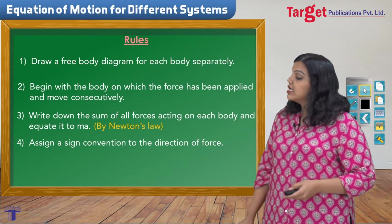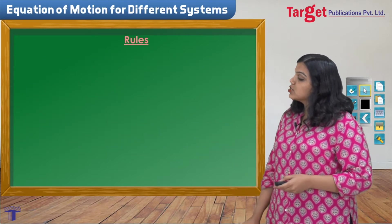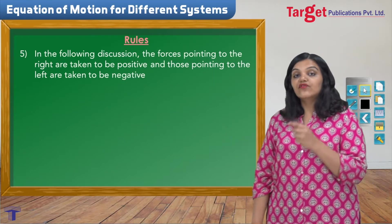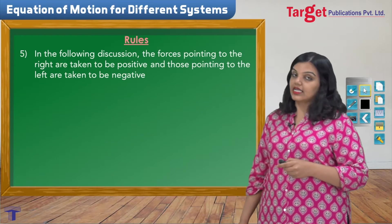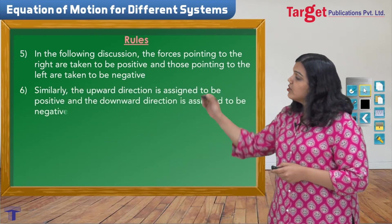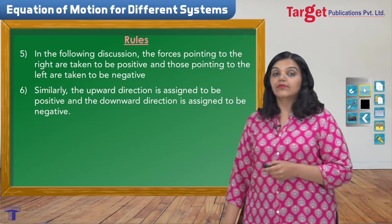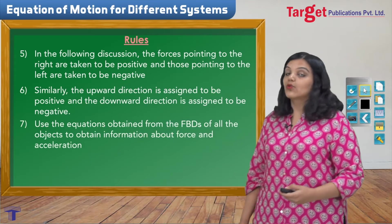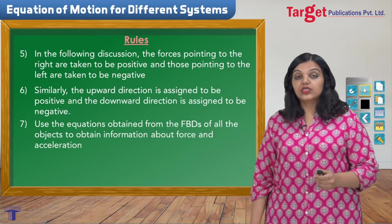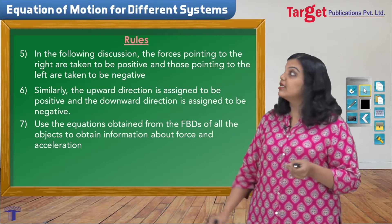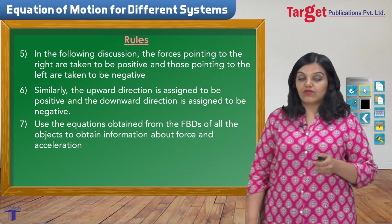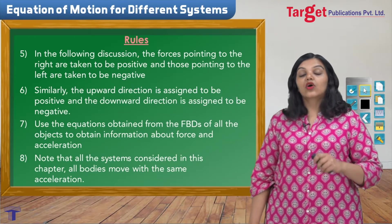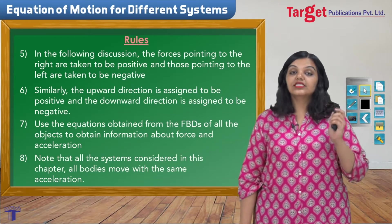These are the first four rules. In our discussion, we go with the sign convention that all forces acting to the right are taken positive and all forces acting to the left are taken negative. Similarly, all forces acting upward are taken positive and all forces acting downward are taken negative. The next rule says to use these equations to find expressions for force and acceleration. And finally, in all the problems in this chapter, we have all bodies moving with the same acceleration.